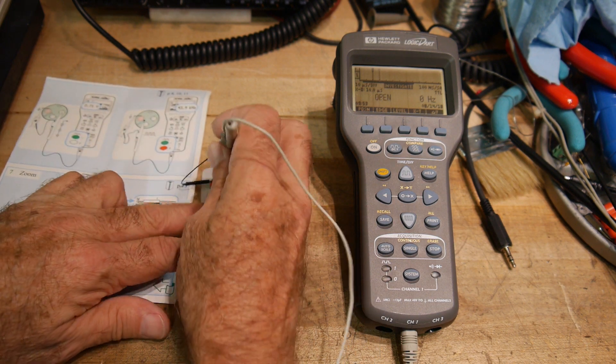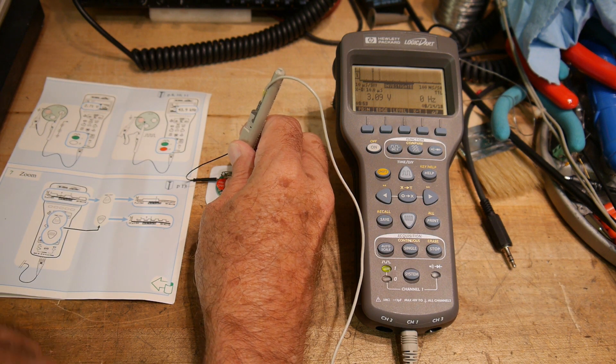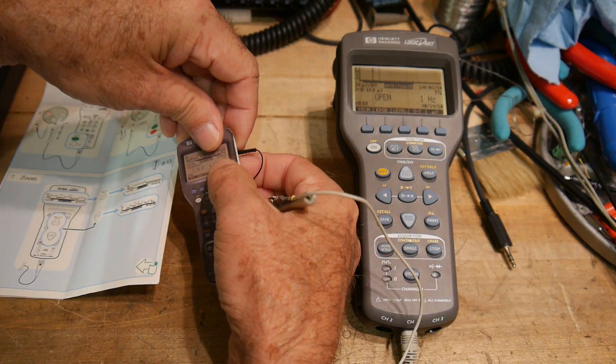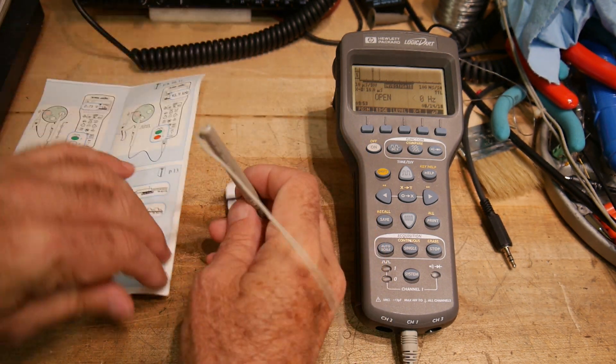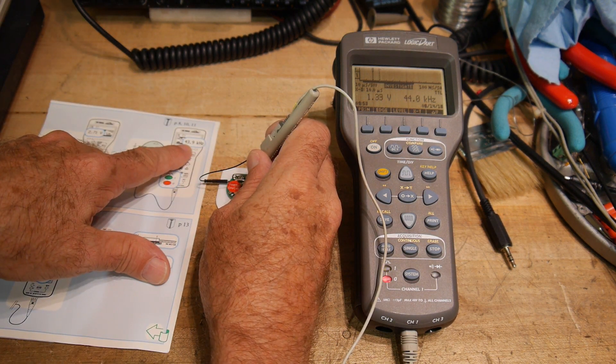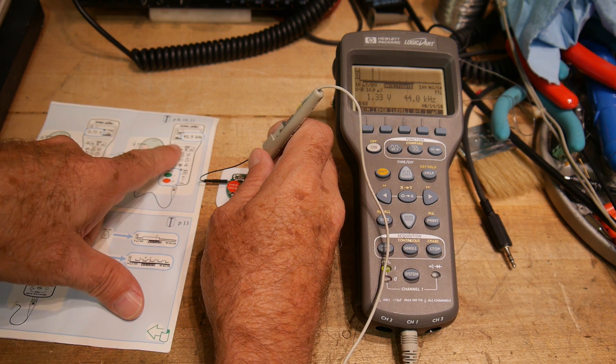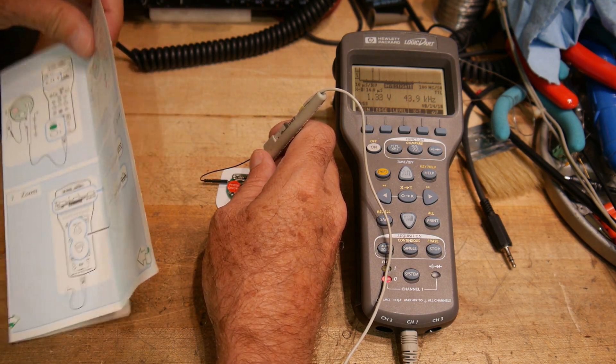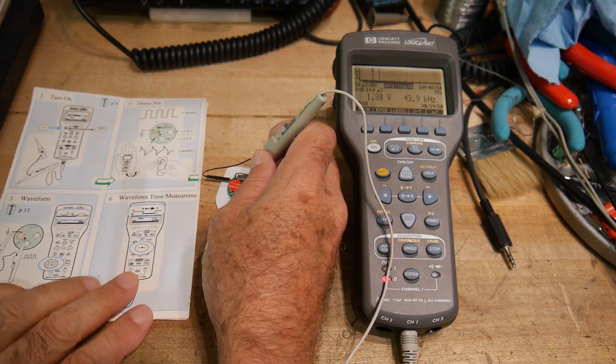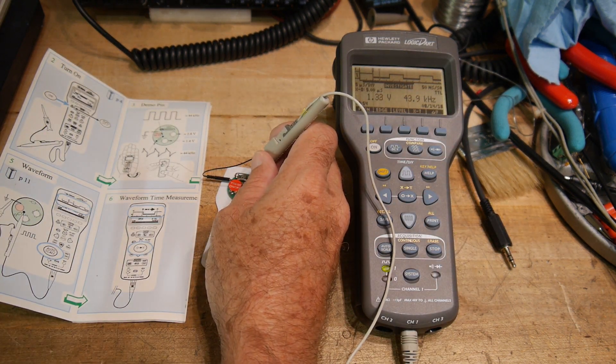The next thing we want to do is measure the top side of this resistor and it should be giving us some frequency. So this we should be getting 43.9, we're getting 44 kilohertz. Perfect. Let's see that was four. Five is waveform. So again monitoring this voltage we hit autoscale. There we go we have a nice waveform.